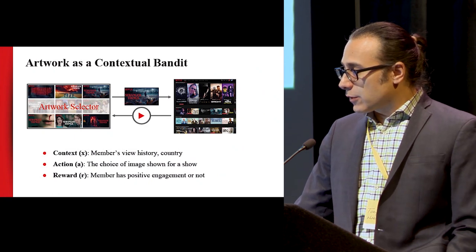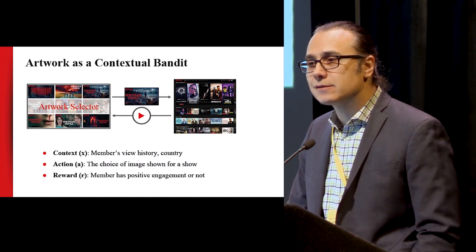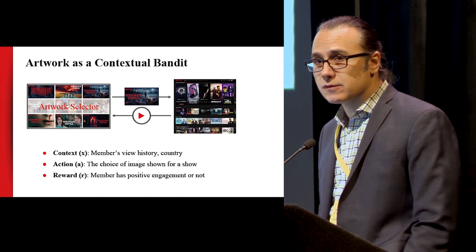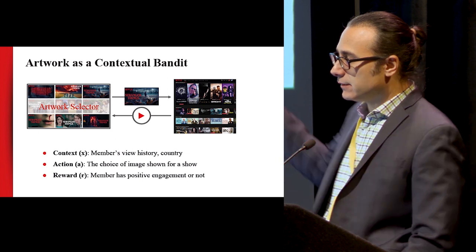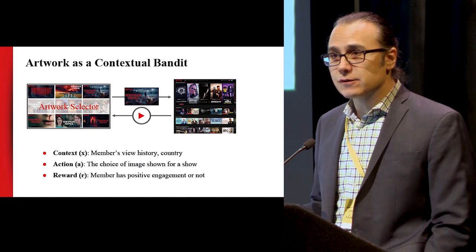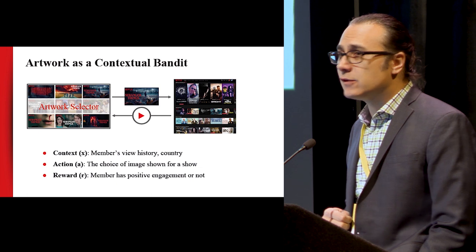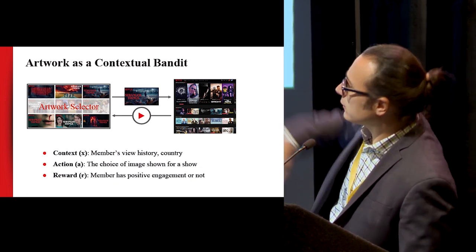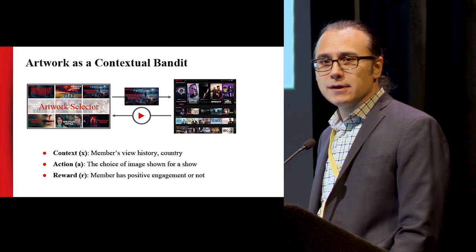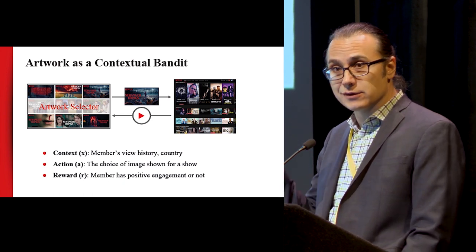For the artwork problem, we set it up as a contextual bandit. The context X is the user's view history — what they liked to watch in the past, what country they're in. The action is: what's the best image to show for that show or movie? There may be nine, or sometimes 20 or so images for Stranger Things. You show one image for a user — that's the action — and all you get to see is whether the user didn't like it and didn't play. The user doesn't tell you 'if you'd shown me the teenage characters image I would have played it.' They just tell you: no, that was bad. So you try something else, get a binary reward, and may have to do nine different tries until you figure out which image worked.